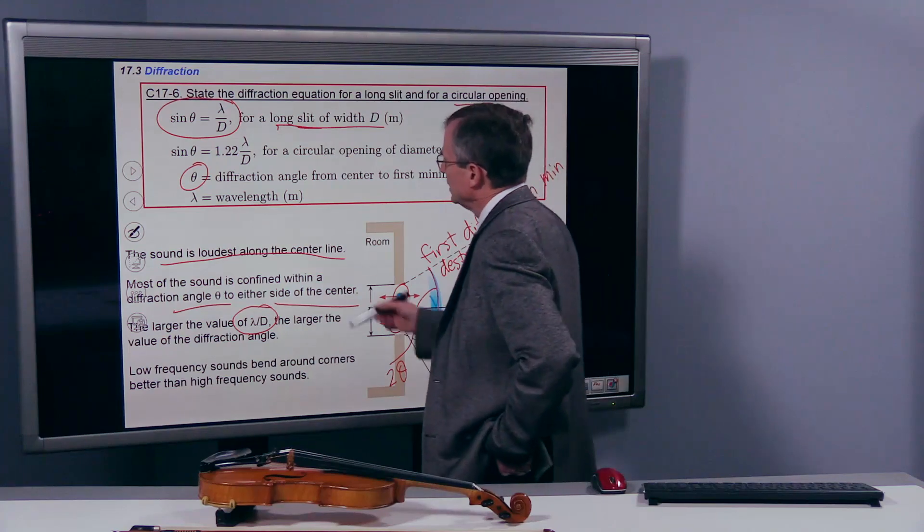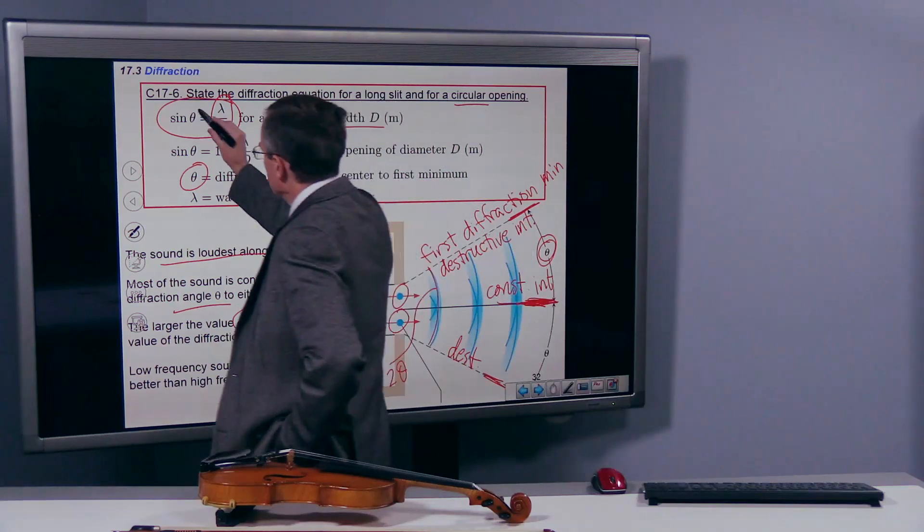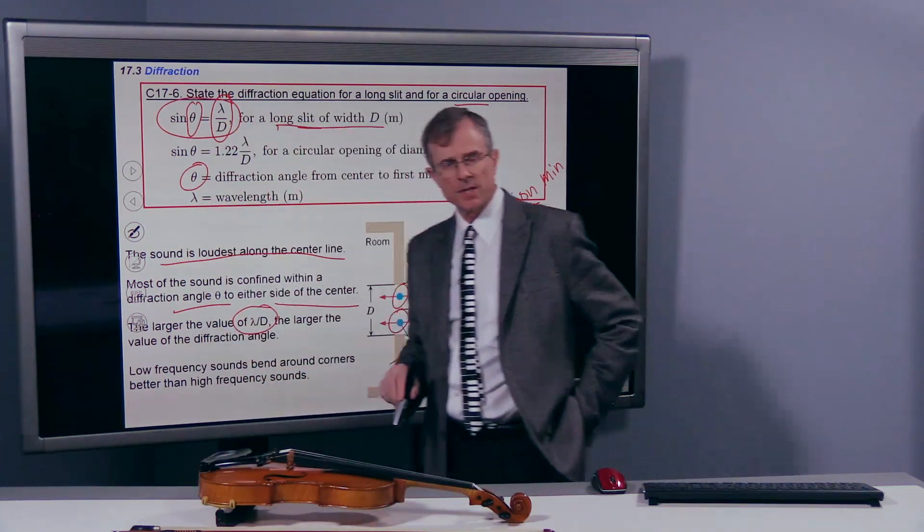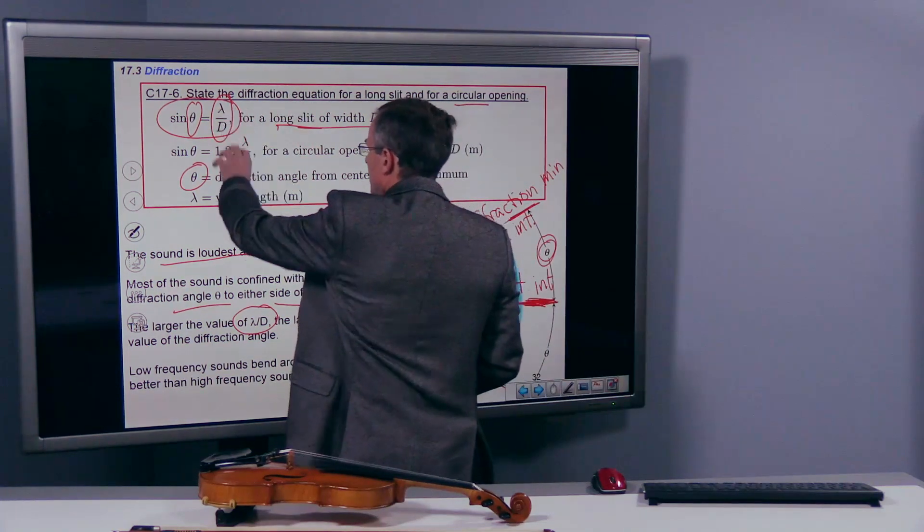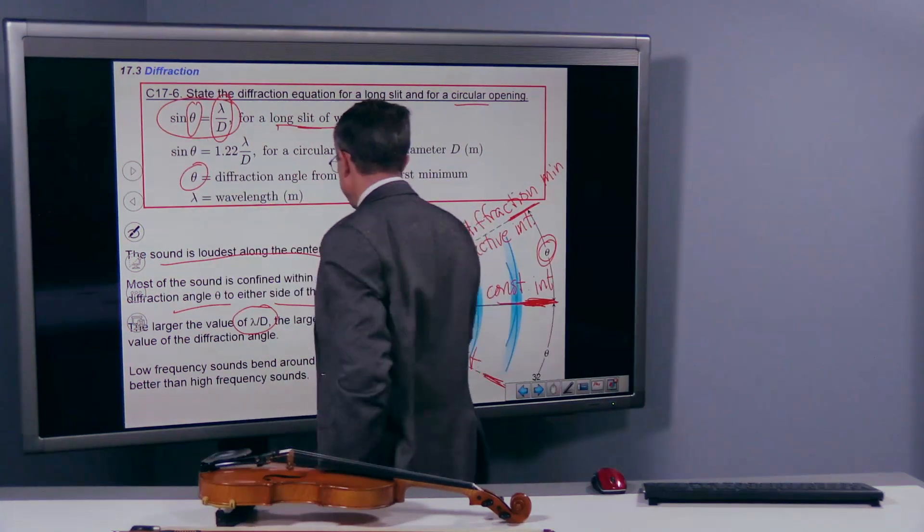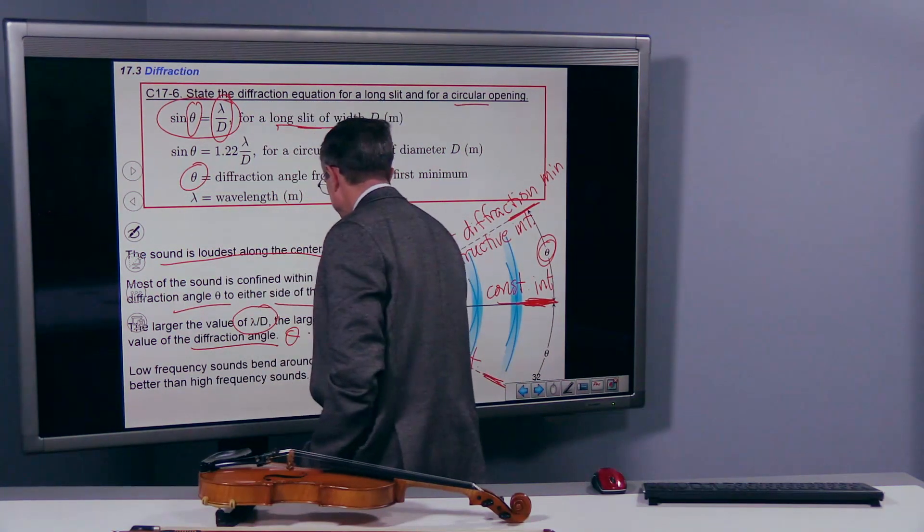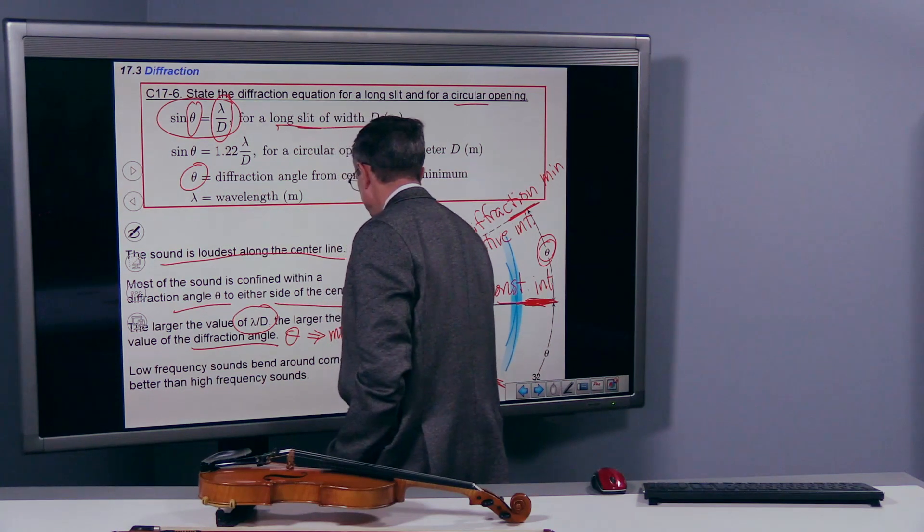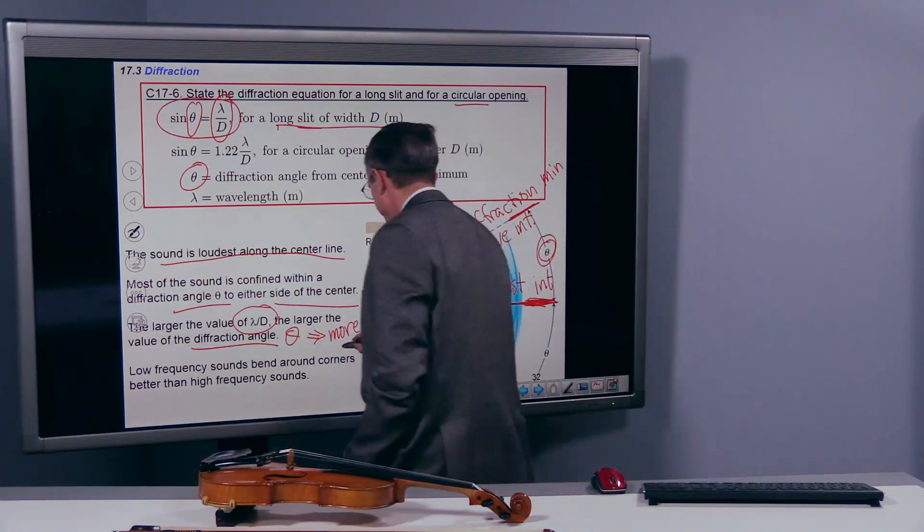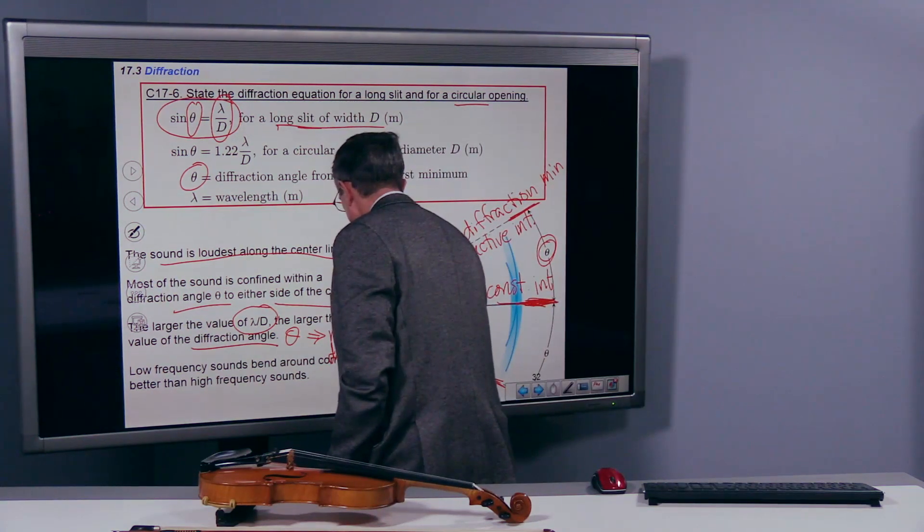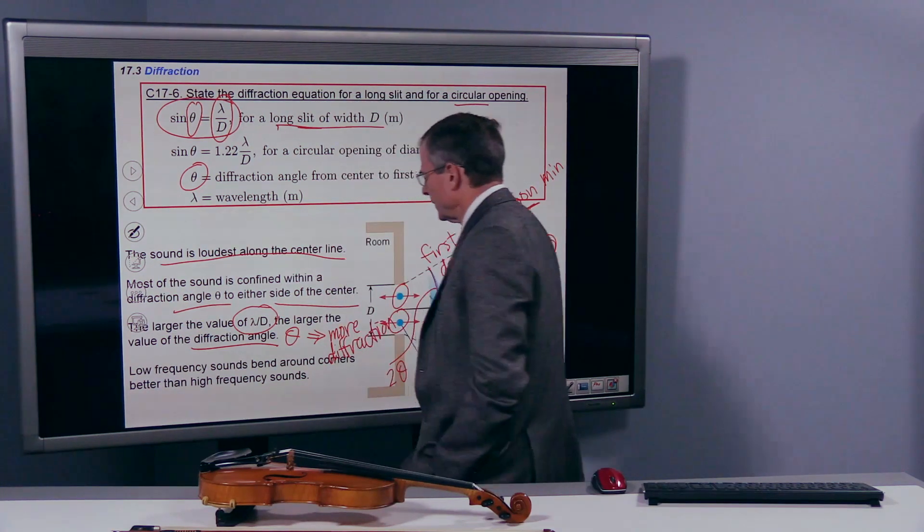And what that says is that if λ over d is large, then that diffraction angle will also be large, because sin θ increases with θ. So if λ over d is large, θ is large, and we'll get more diffraction. And what's diffraction? Bending.